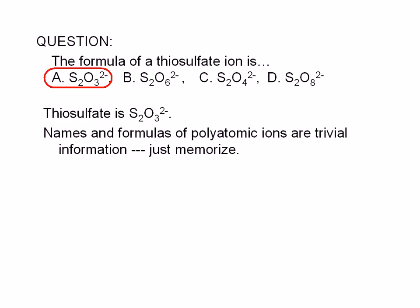Names and formulas of polyatomic ions are trivial information. In other words, you just need to memorize them as part of the basic vocabulary of chemistry. Whether or not your teacher requires you to memorize them, it is a good idea to do so. It is difficult to memorize these names and formulas in isolation, but easier if you try to memorize them in groups based on similarities. Here are a few relationships you might find useful.